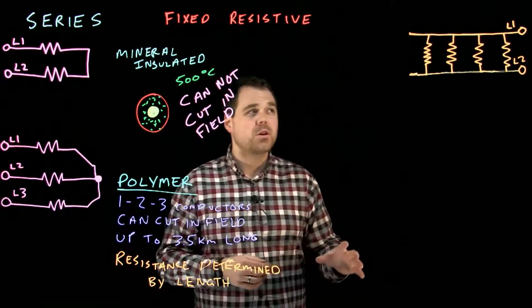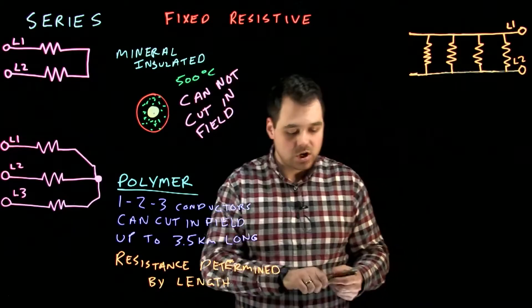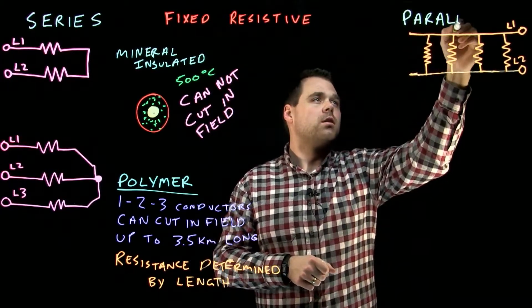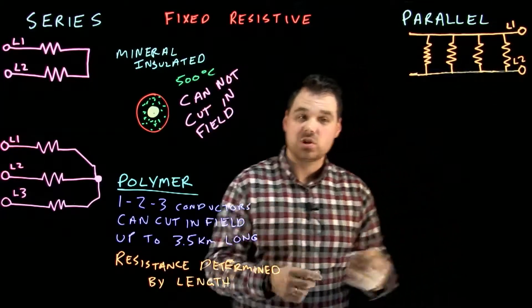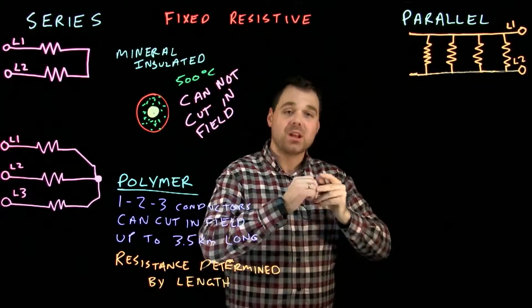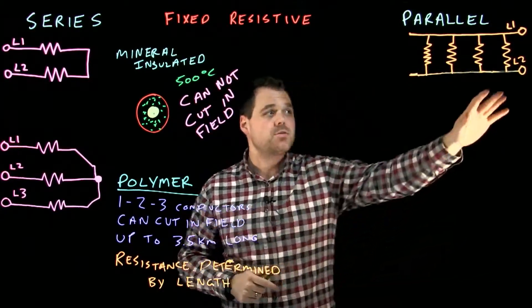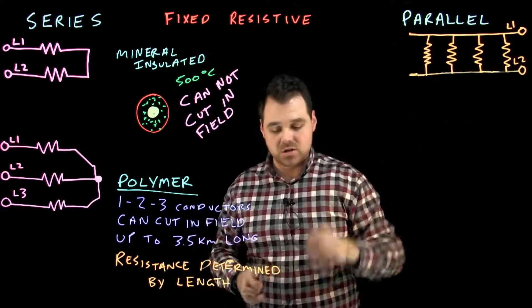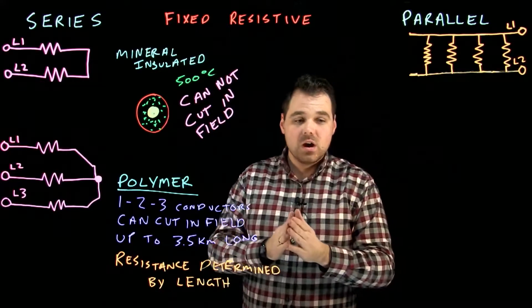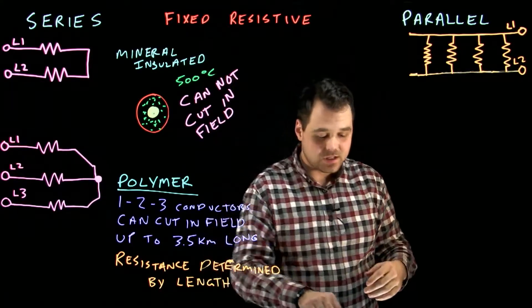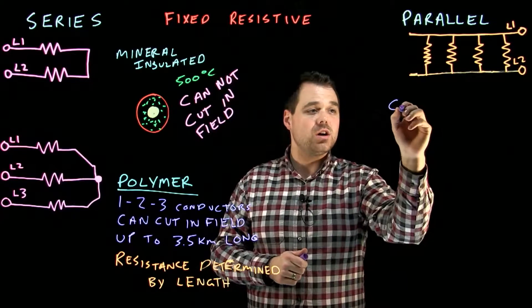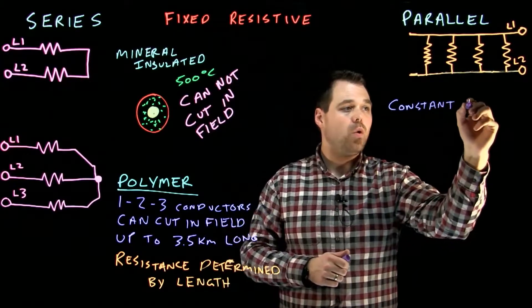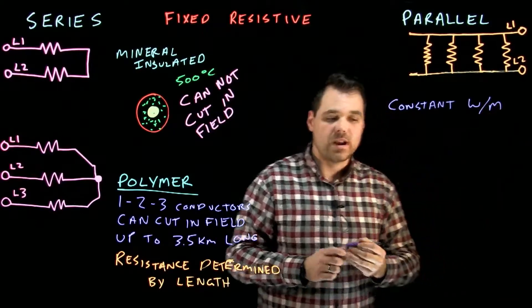So the other type I want to talk about today is called parallel. So this is parallel fixed resistive heat trace. Now, with parallel fixed resistive heat trace, obviously, we'd have a circuit like this. We would come off our source. We would have all these little heaters in parallel. Now, the nice thing like this is with a parallel fixed resistive, we get a constant watt per meter rating.